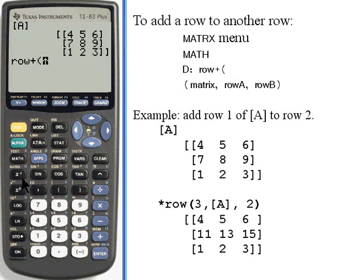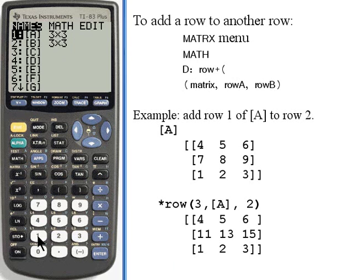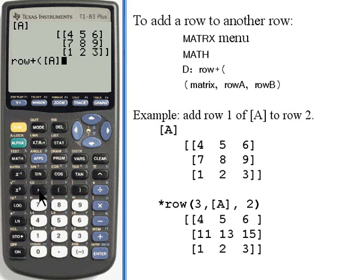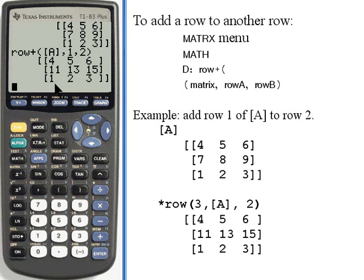This is matrix A. We need a comma after it. I wanted to add row 1 to row 2, so I'll enter 1, comma, 2, close the parentheses and press enter. What I've got now is row 2 has become the sum of the old rows 1 and 2. I had 4 and 7, they added up to 11, 5 and 8 became 13, and 6 and 9 became 15. Notice the original row 1 has not changed. The only thing that's changed is row 2, the row that I added that first row onto.